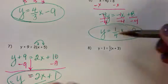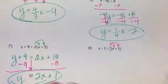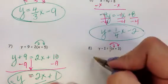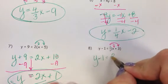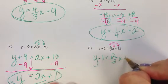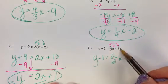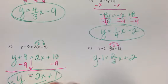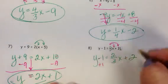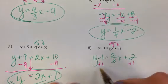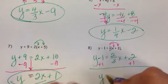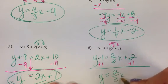Last but not least, number 8. Distribute two-thirds. y minus 1 equals two-thirds x plus—well, two-thirds of 3 is actually just 2. This isn't that difficult of a problem. I'm going to add 1 to get that out of there. y equals two-thirds x plus 3.